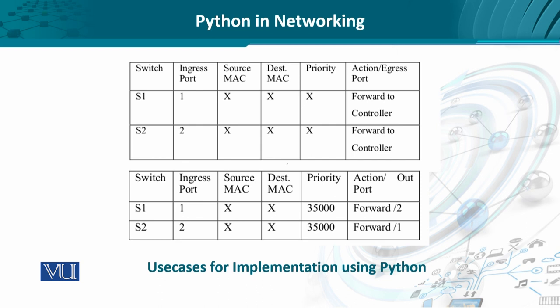Python allows these use cases to be implemented in both Pox and Ryu. In the first use case, two switches S1 and S2 have conditions: if the ingress port is 1 for switch 1, then traffic should be forwarded to the controller, with all other conditions wildcarded. In the second use case, if the priority for traffic on the ingress port at switch 1 is 35,000, then forward it to output port 2. These are interesting use cases for comparing controller implementations.